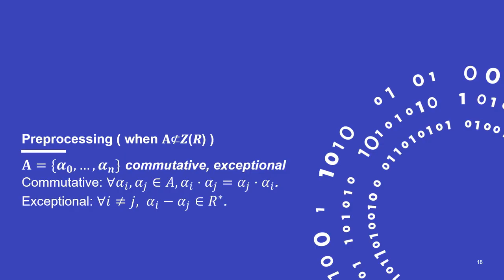I will conclude this talk by showing how to produce the preprocessing material for the case when the evaluation points are not contained in the center of the ring. I will show two different protocols. The first one is black box on the choice of the ring, and the second one will be more practical and restricted to the case of matrix rings.